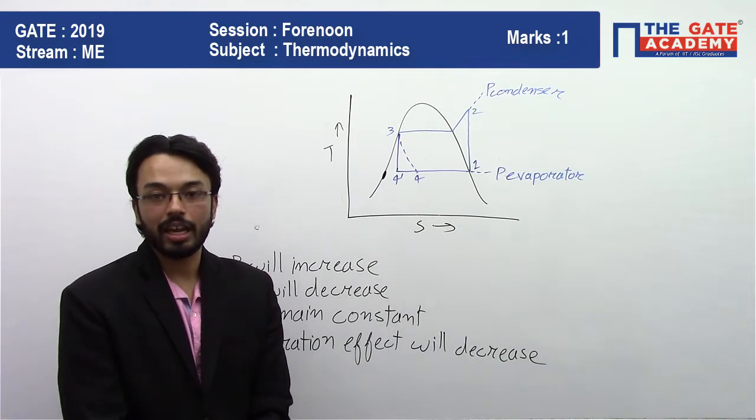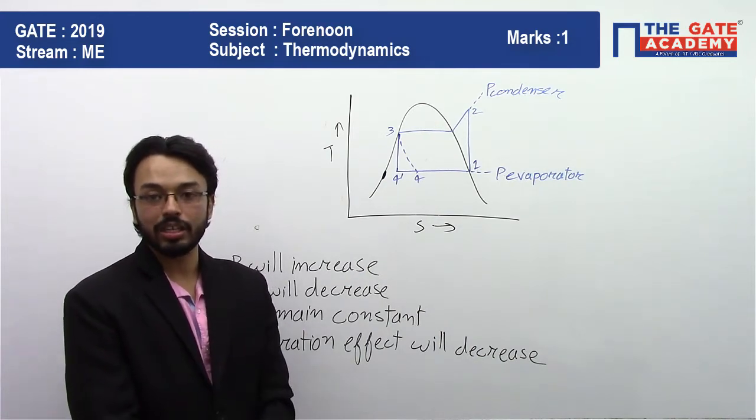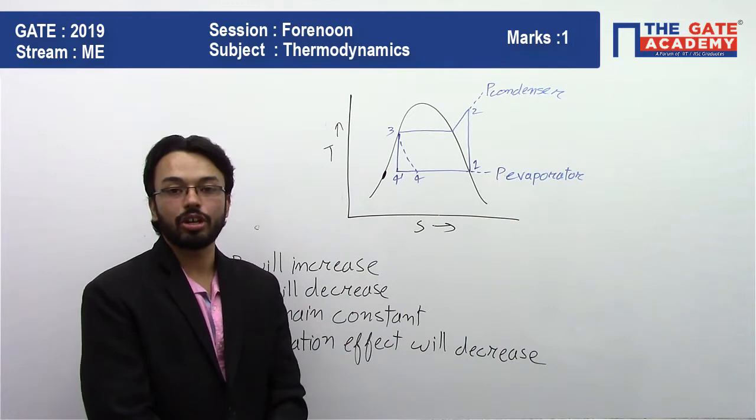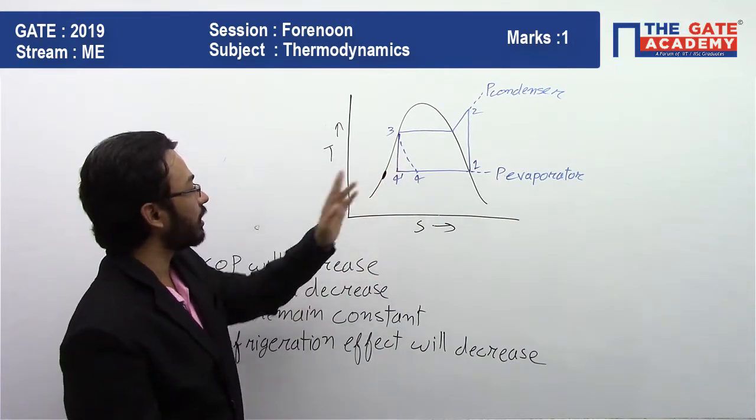And since the process is reversible, it can be drawn as a straight line on the T-S diagram. And since it is adiabatic, that is reversibly adiabatic, so T delta S is 0, that is the entropy is not increasing. So a straight vertical line.